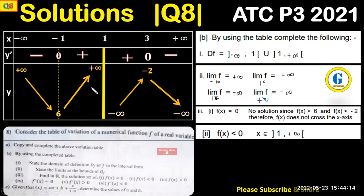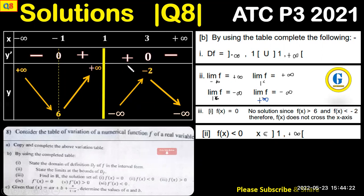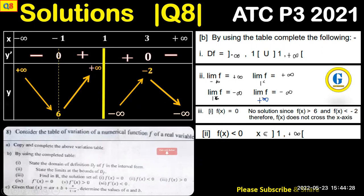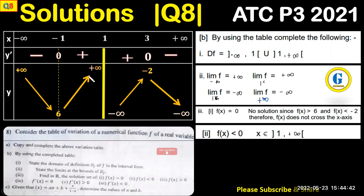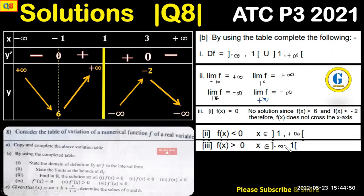For f(x) < 0, we look for y values which are less than zero. On the right side of the curve all y values are negative, and this occurs for x from 1 from above to positive infinity. For f(x) > 0, y is greater than zero in the left interval, and this occurs for x belonging to the interval from negative infinity to 1 from below.